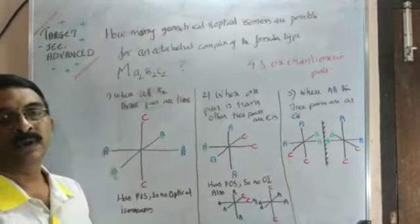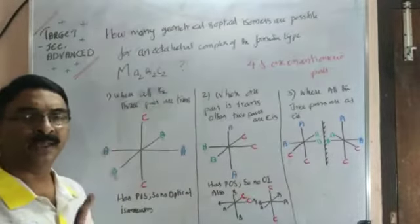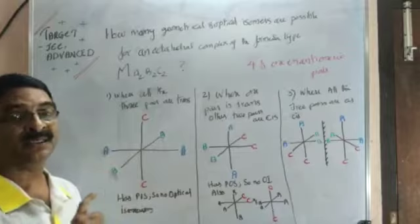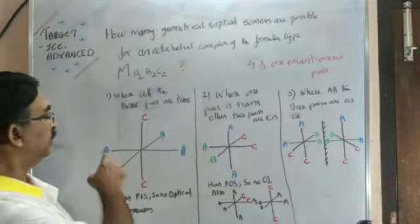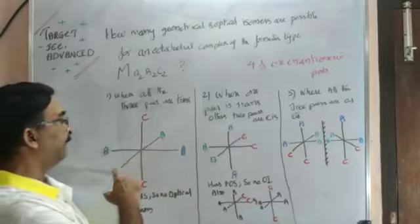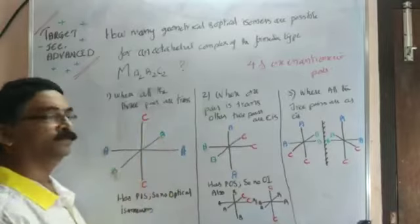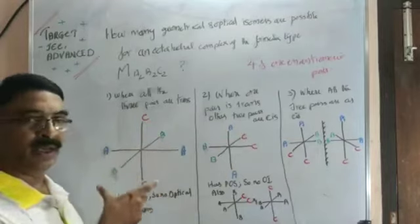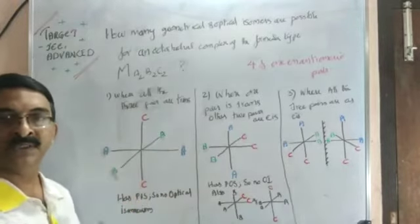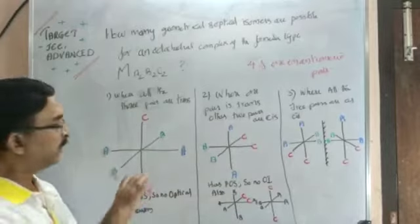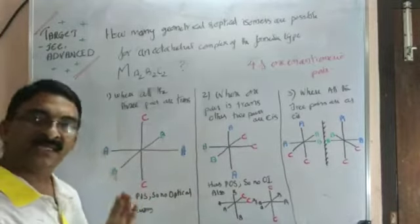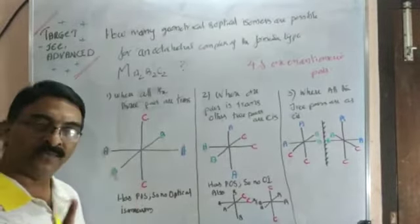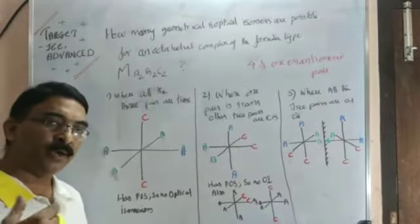Our approach must be more scientific here. A2B2C2. First we apply the case where pair of A, pair of B, pair of C, all the three sets are trans. Look here. A trans to A, B trans to B, C trans to C. Think about any other possibility where we retain A versus A, B versus B, and C versus C in trans positions, but something other than this. No. Only this structure is possible. Where all the three pairs are appearing as trans, there is only one structure possible.